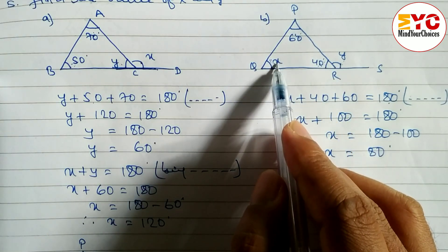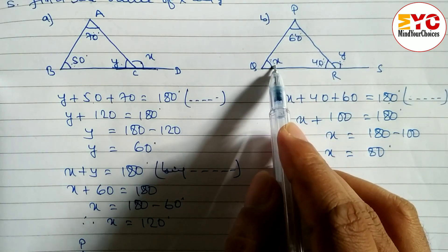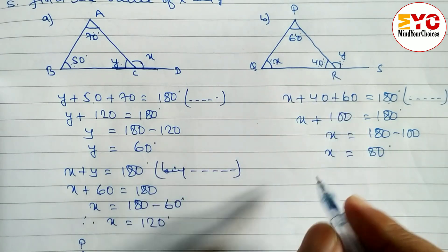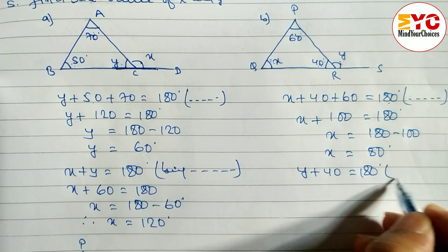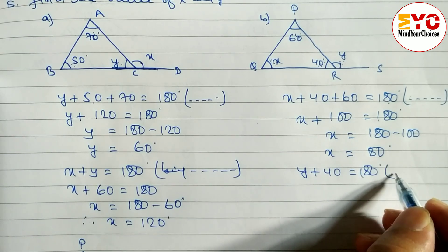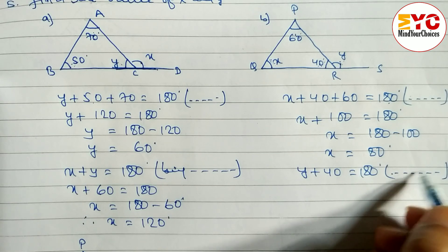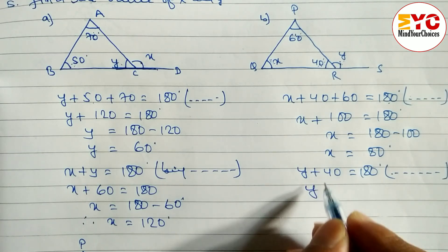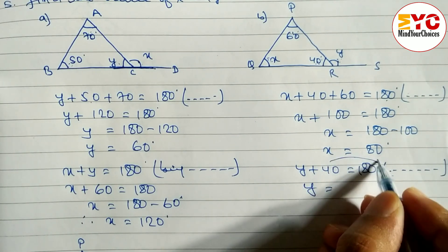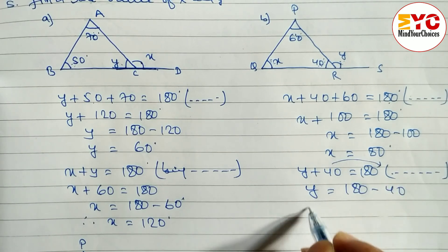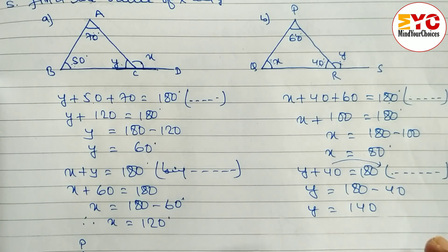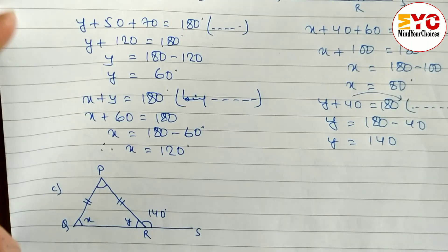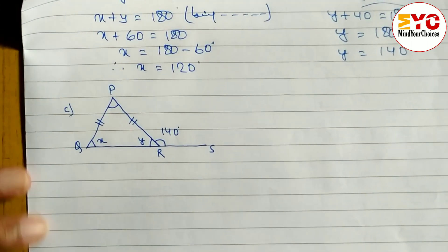Now we have to find the value of y. We can write y equals 60 plus x directly, since the exterior angle equals the sum of two opposite interior angles. Or we can write y plus 40 equals 180 degrees, reason: being a supplementary angle or being a straight line. So y equals 180 minus 40, therefore y equals 140 degrees.